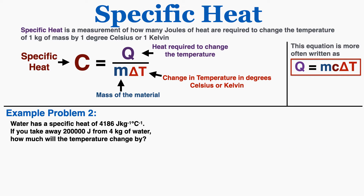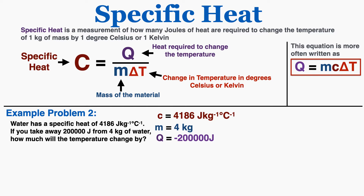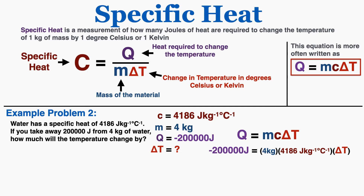In example two, we're using water again, but this time we're taking away 200,000 joules from 4 kilograms of water and want to know how much the temperature will change. Because we're removing heat energy, this will cool the water and decrease the temperature. Writing out what we know — the specific heat, the mass, and Q = −200,000 joules — and solving for ΔT gives a final answer of −11.9 degrees Celsius.